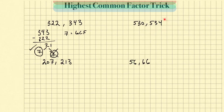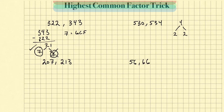Next problem: the greatest common factor between 530 and 534. First thing I'm going to do is take the difference — the difference between 534 and 530 is 4. Now I want to see if 4 can be divided into 530 and 534. The divisibility check for 4 is to check if the last two digits form a number divisible by 4. We know 30 is not divisible by 4 evenly, so 4 is not a common factor. I'll split this further down into 2 and 2 — both 530 and 534 are divisible by 2. So the greatest common factor equals 2.